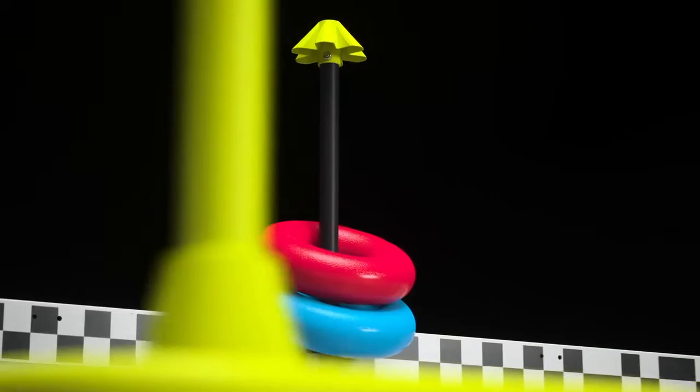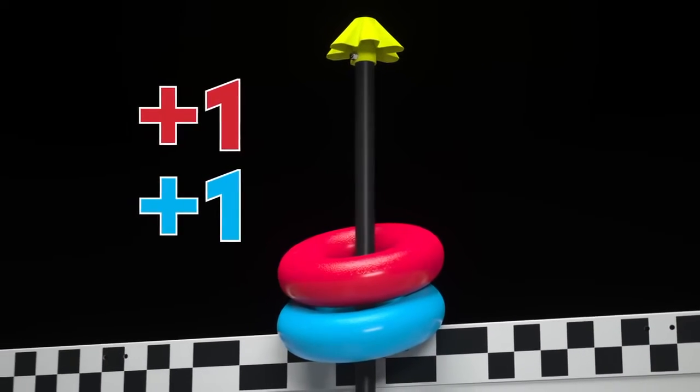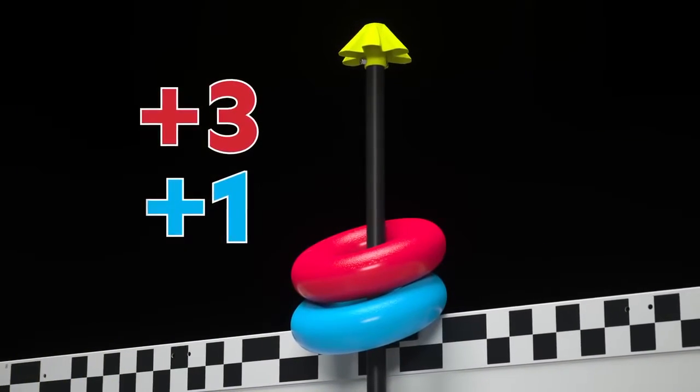Rings that are scored on stakes are worth one point for that ring's alliance. The highest ring on each stake is called the top ring and is worth two additional points.